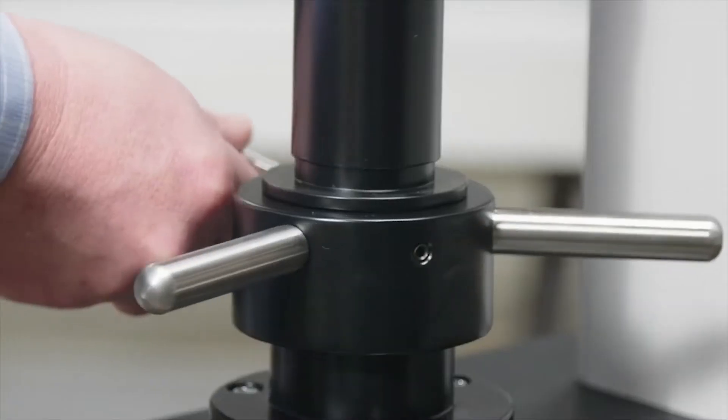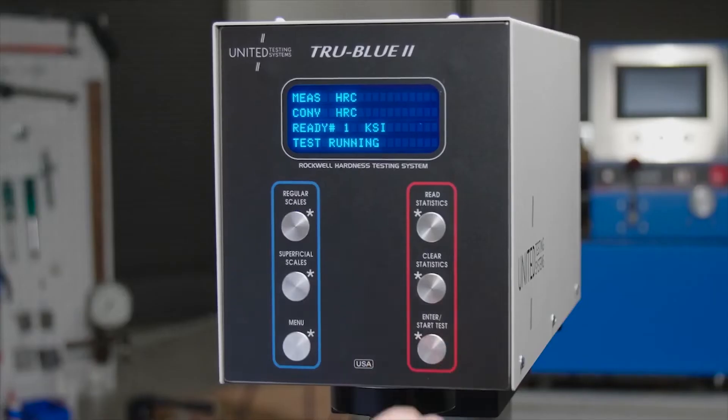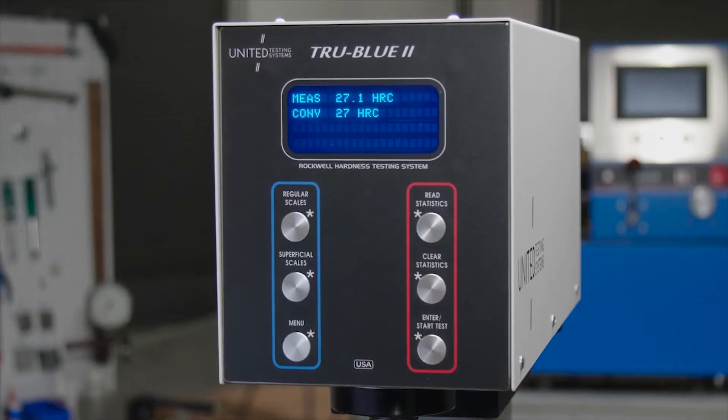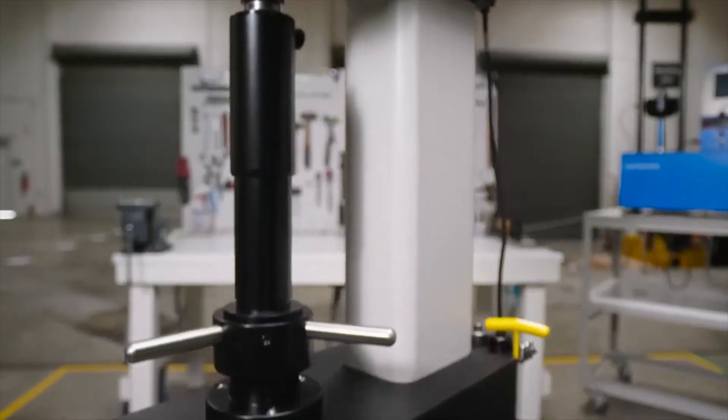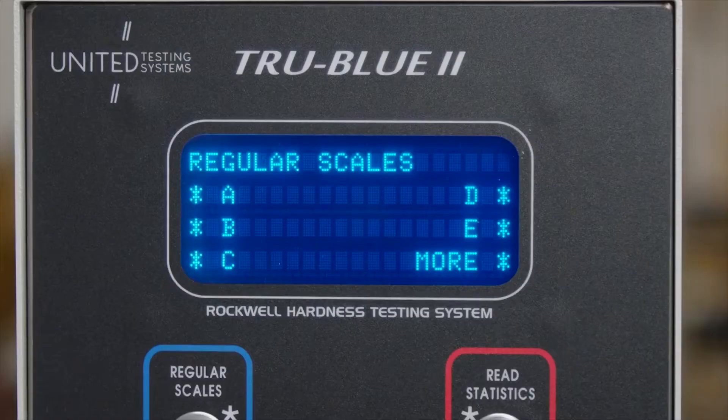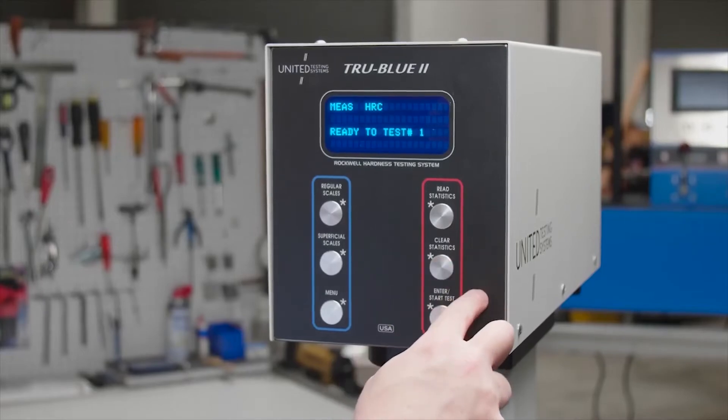Running a test is as simple as loading your sample and choosing a few test parameters. Tests can be run using the Start button located on the main panel or the secondary button on the side of the machine. Simple options make it easy to select regular scales or superficial scales as well as read or clear your statistics and change units of measurement.